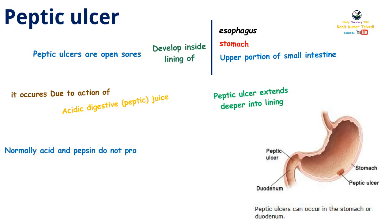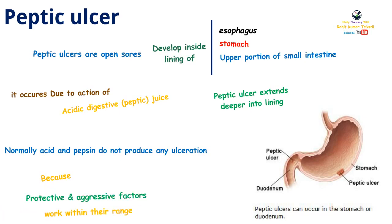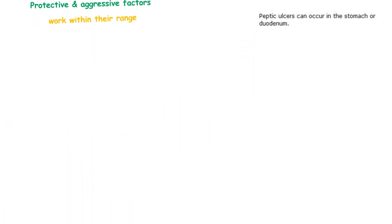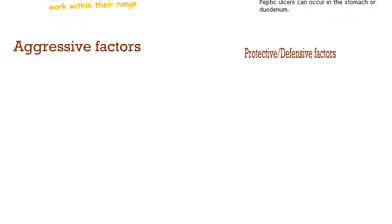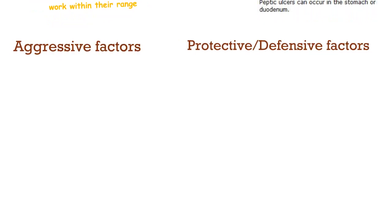Normally, acid and pepsin do not produce any ulceration because productive and aggressive factors work within their ranges. Now let's discuss aggressive and protective factors. An imbalance between these two factors may contribute to the development of Peptic Ulcer.